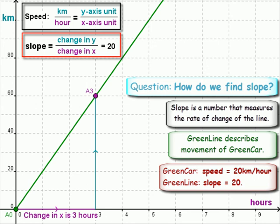What's our change in y? We went from 0y to 60y. So our change in y is 60 kilometers. Do we still get 20? Our change in y is 60 divided by 3 equals 20.